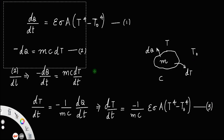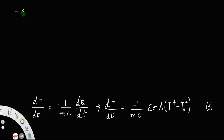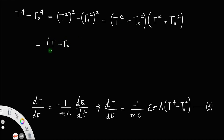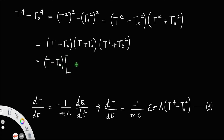Now, let us take the term T⁴ minus T₀⁴ from equation 3. This can be written as (T²)² minus (T₀²)², which follows the identity a² minus b² equals (a minus b)(a plus b). Here a equals T² and b equals T₀². Applying the identity again, this further factors as (T minus T₀)(T plus T₀)(T² plus T₀²).